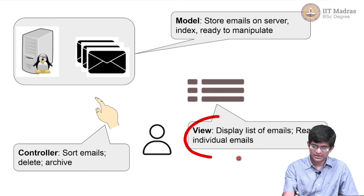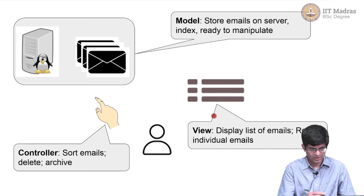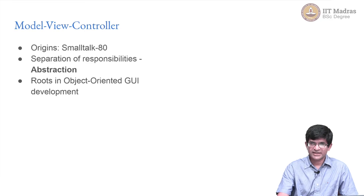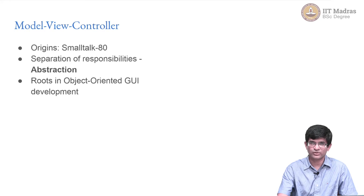As I said earlier, in this lecture we are going to concentrate on the view. The core idea of model view controller has its origins in the late 70s and early 80s. In particular, there was a language called Smalltalk that came out of Xerox PARC, the Palo Alto Research Center. Xerox PARC has a very important place in the history of modern computing, and a lot of very interesting developments both in terms of hardware and software came out of that lab.